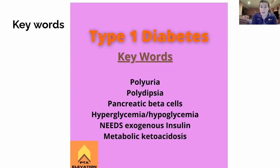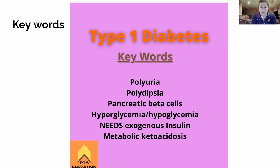The pancreatic alpha cells produce glucagon, which has the opposite effect of insulin. When it comes to type 1 diabetes, those pancreatic beta cells are completely gone. Hyperglycemia or hypoglycemia — if you see that it's diabetes, you have to decipher if it's type 1 or type 2, or if it even matters for the question.